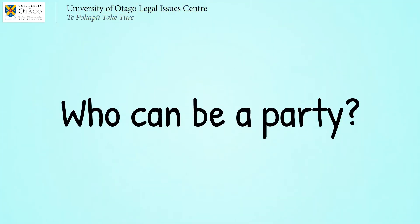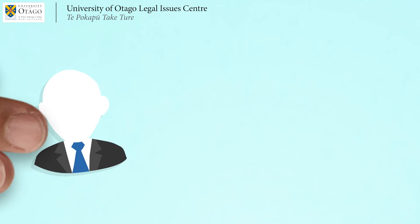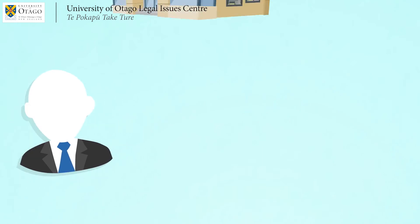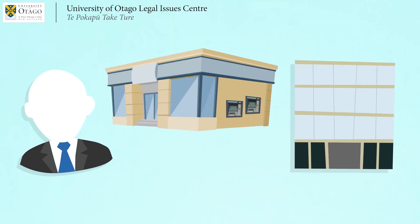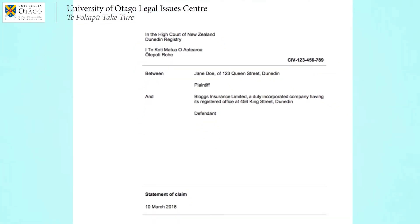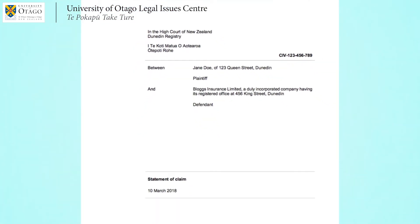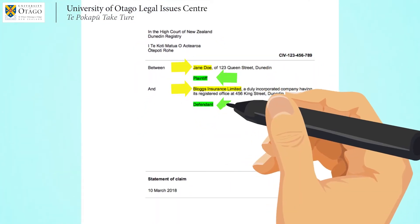Who can be a party? A party can be a person, company, or other organisation. The names of each party and their role in the dispute are on the cover sheet of court documents.